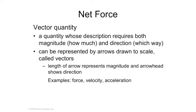A net force going left doesn't mean that there was only one force going left. There could have been 50 forces all pushing in different directions, but they canceled each other out, and whatever was left is called a net force. A net force is always going to be in one direction at a certain amount of force.